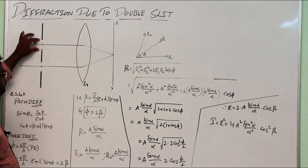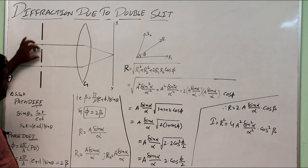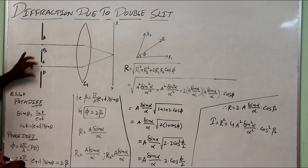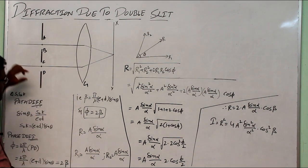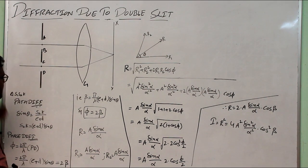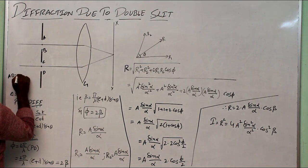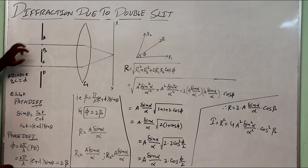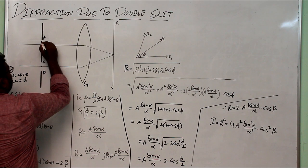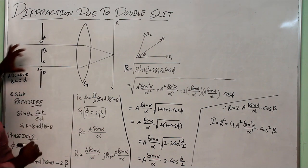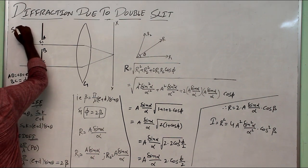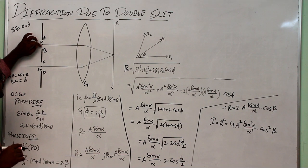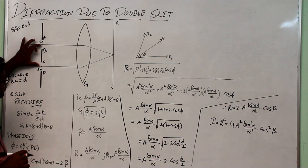A double slit consists of two narrow slits separated by a small gap. The slits are labeled A, B (the first slit) and C, D (the second slit), each of size e. The gap between them, B to C, is d. So AB = CD = e and BC = d. The centers of the two slits are S1 and S2, and the gap between S1 and S2 is e plus d, since the center contribution is e/2 + d + e/2.